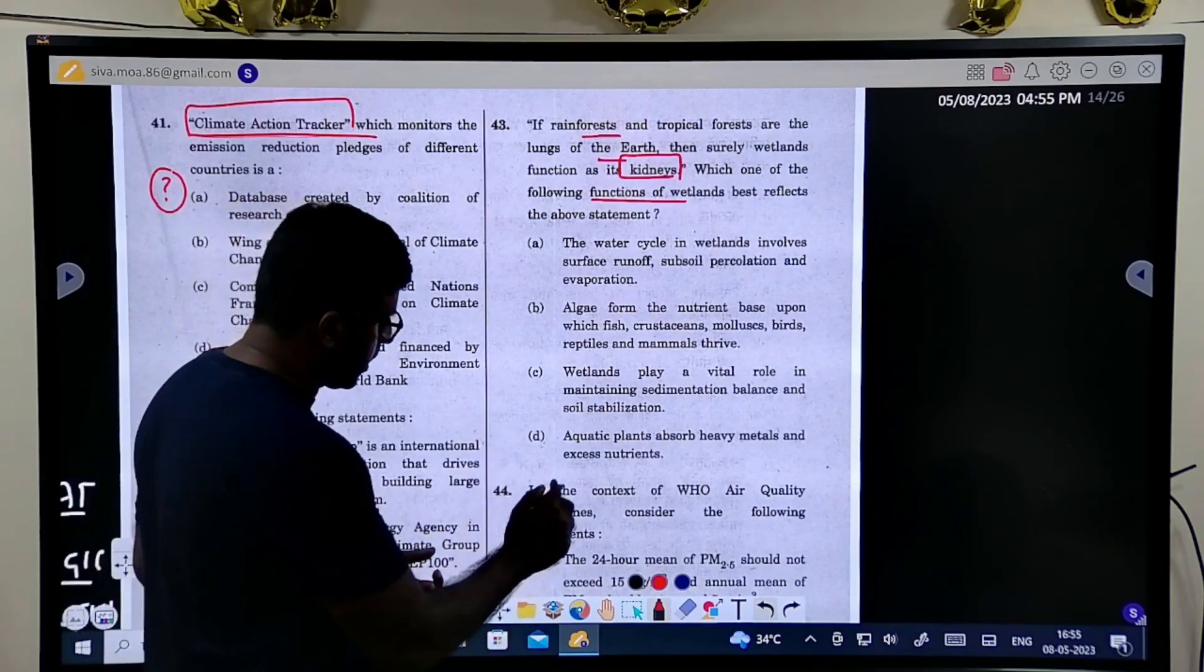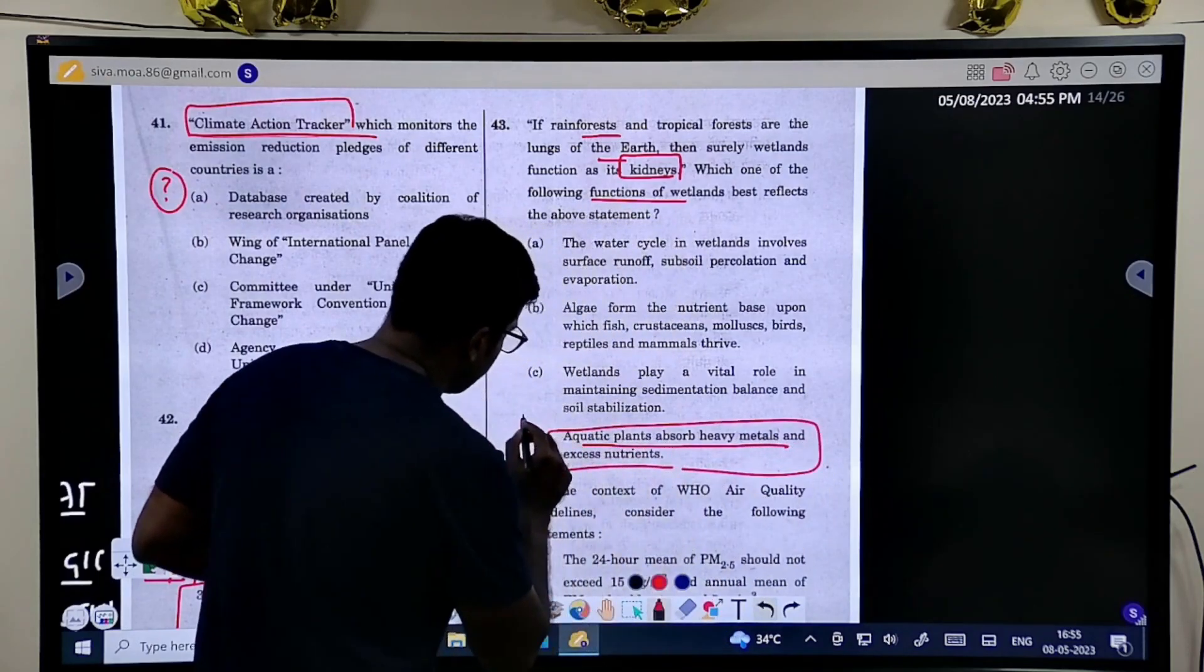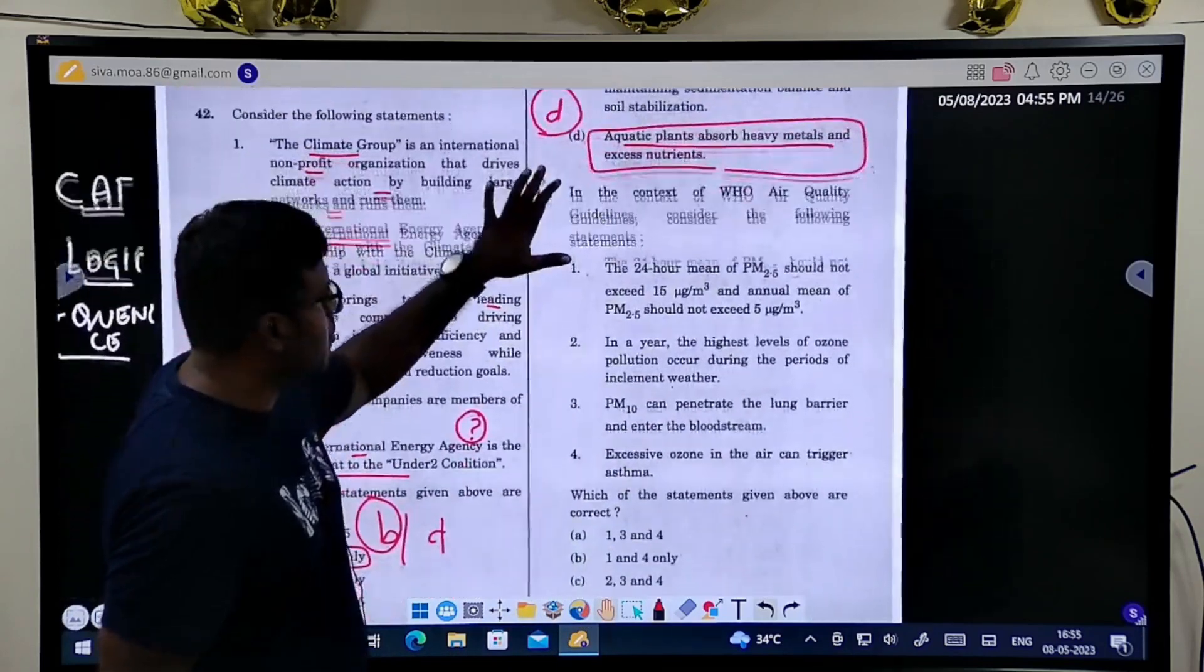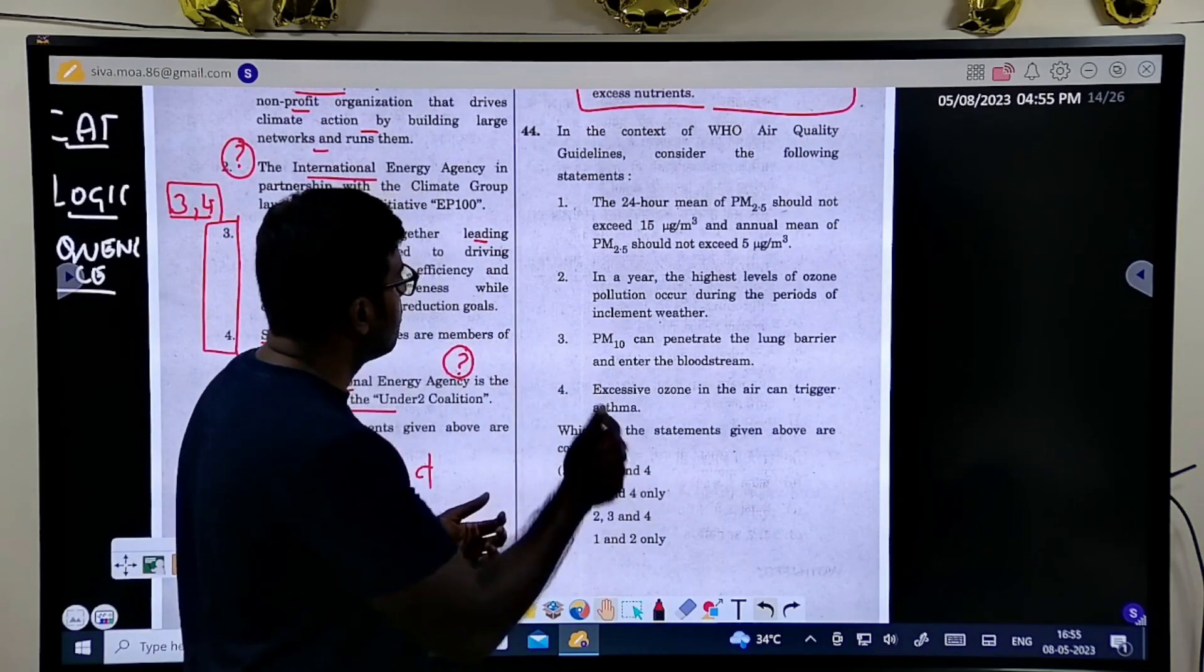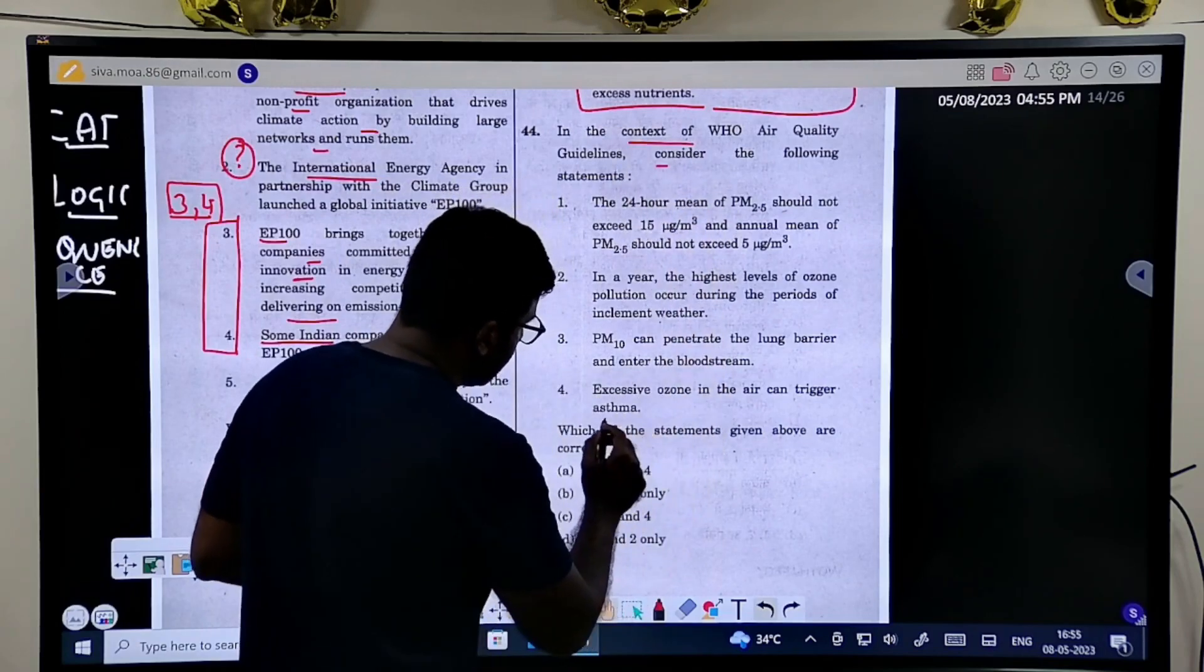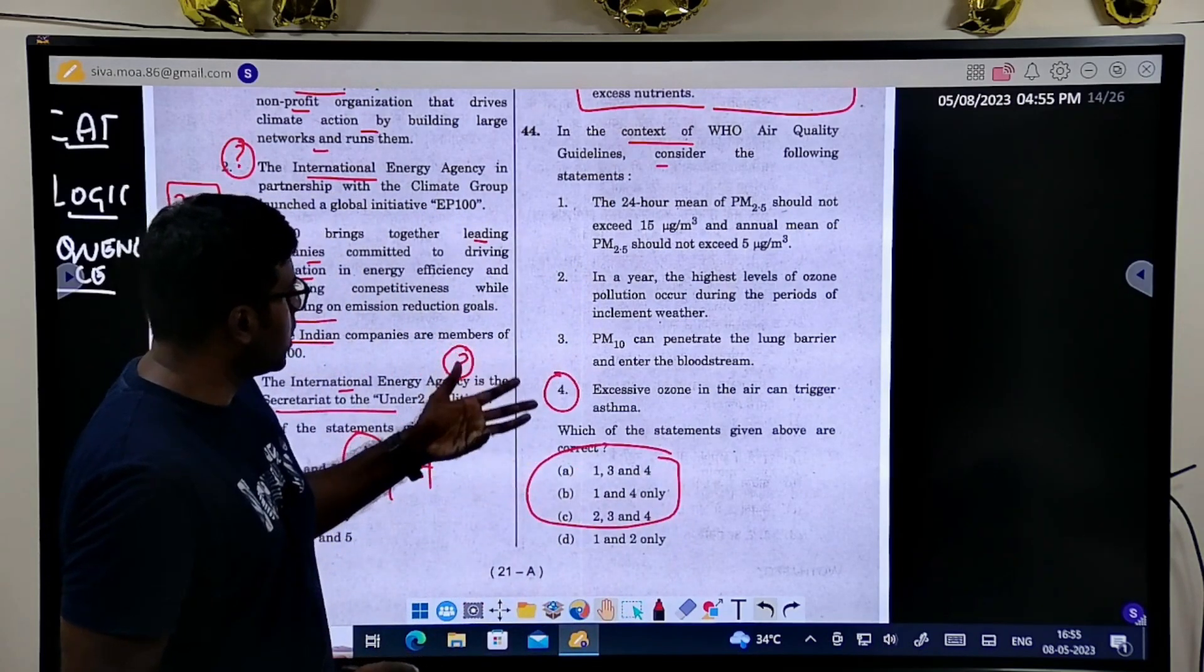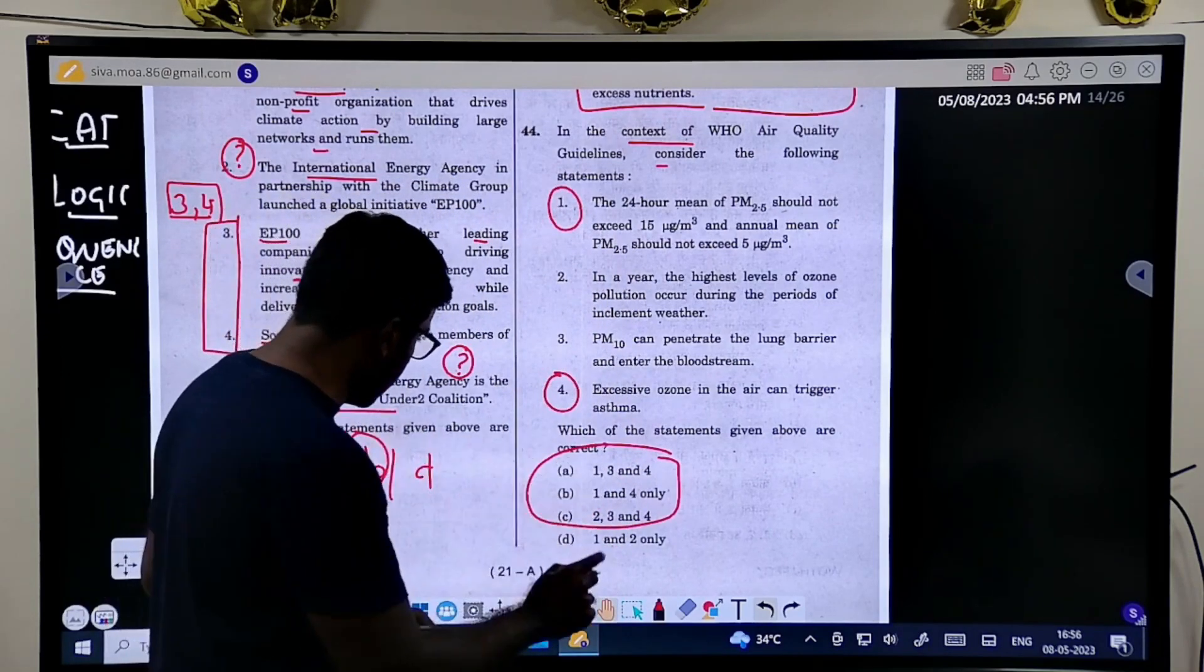The work of a kidney is to get the nutrients, the last nutrients which is there. Aquatic plants absorb heavy metals and excess nutrients. So this will be there, the working of a kidney. Usually they used to ask what is a wetland, but now they have gone a little deeper into asking what are the purpose of wetland with a metaphor of kidney. But this question, I was not sure.